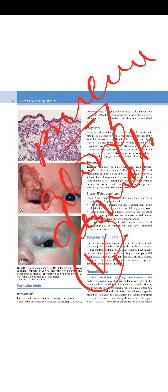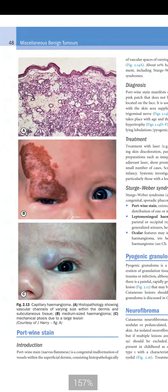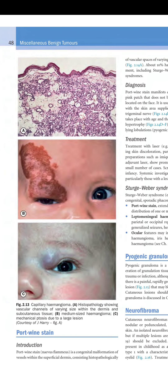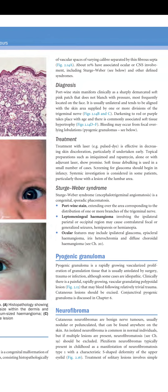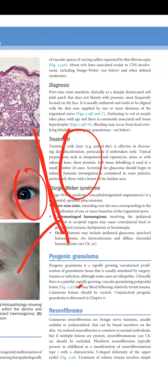Port wine stain is a congenital malformation of vessels within the superficial dermis, consisting histopathologically of vascular spaces of varying caliber separated by thin fibrous septa. About 10% have associated ocular or CNS involvement, including Sturge-Weber and other defined syndromes. In histopathology, the vascular channels are divided by fibrous septa.